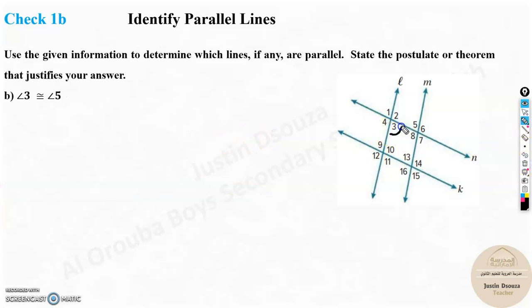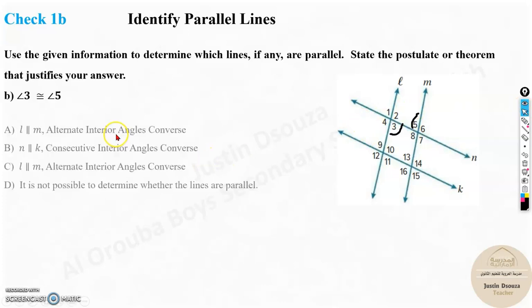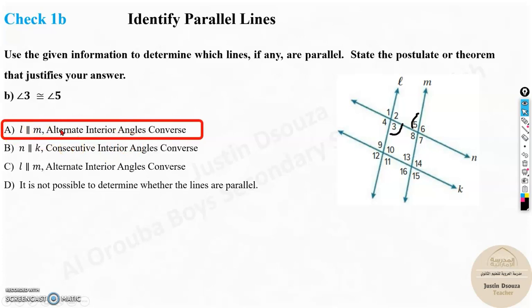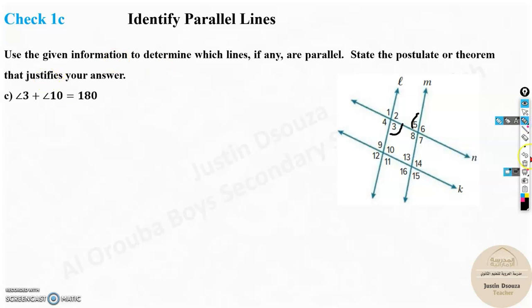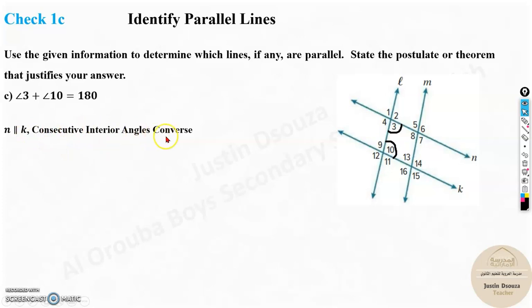For angles 3 and 5: these are alternate interior angles because they are opposite and inside the parallel lines. By the Alternate Interior Angles Converse, lines L and M are parallel — that is option A. For angles 3 and 10 with a measure of 180 degrees: that means they are supplementary, so by the Consecutive Interior Angles Converse, lines N and K are parallel.